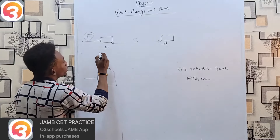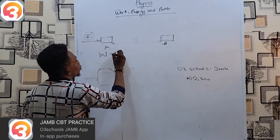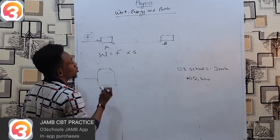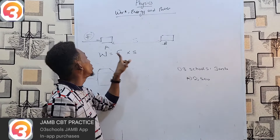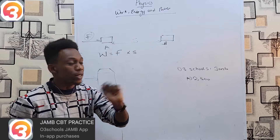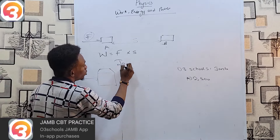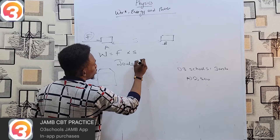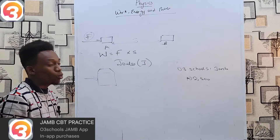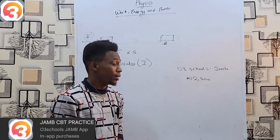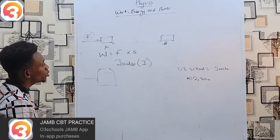Mathematically, work done equals force times distance. That tells you that if distance is zero, zero times anything returns zero. The unit of work is joules (J), and work is a scalar quantity.